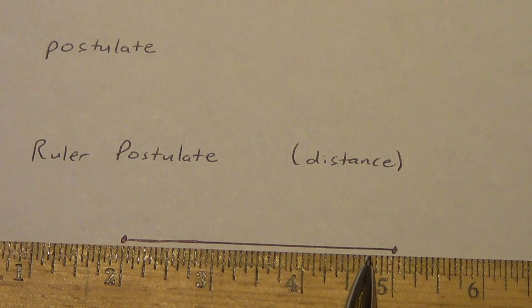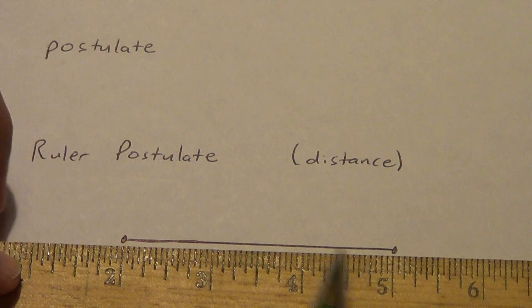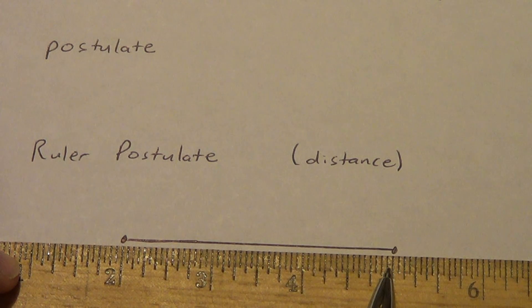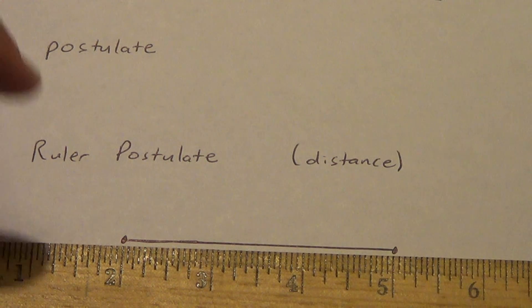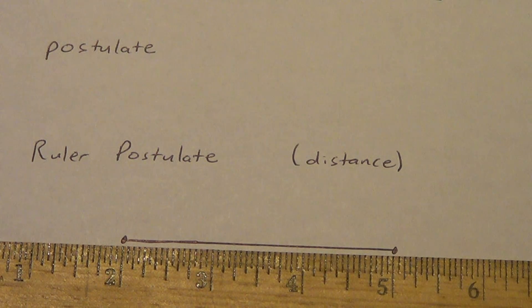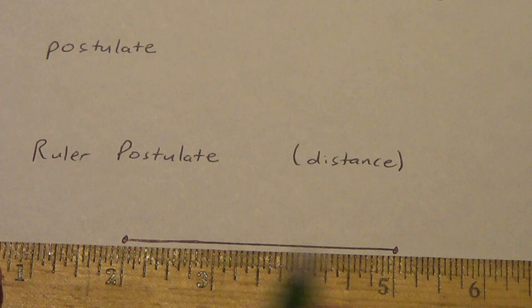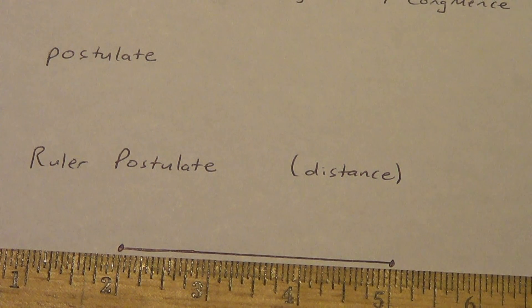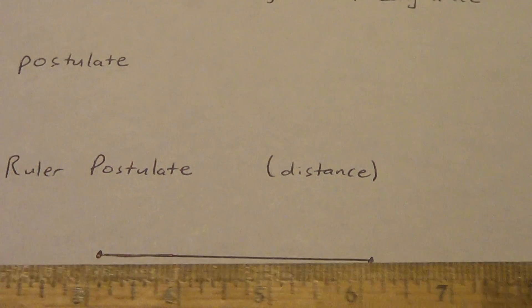It's the difference, and it's an absolute value. The order of a segment doesn't matter, so if I did two minus five, that gives me negative three. Negative three inches doesn't make sense, so that's why we use absolute value — it means our answer is going to be positive no matter what. The absolute value of negative three is still three inches.